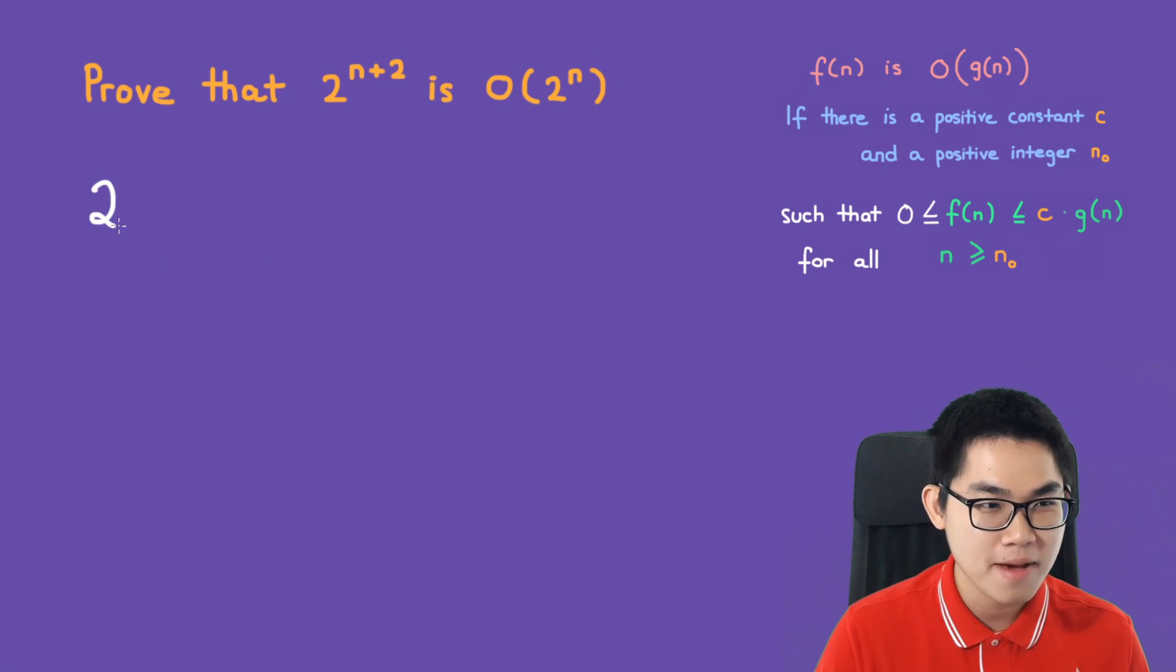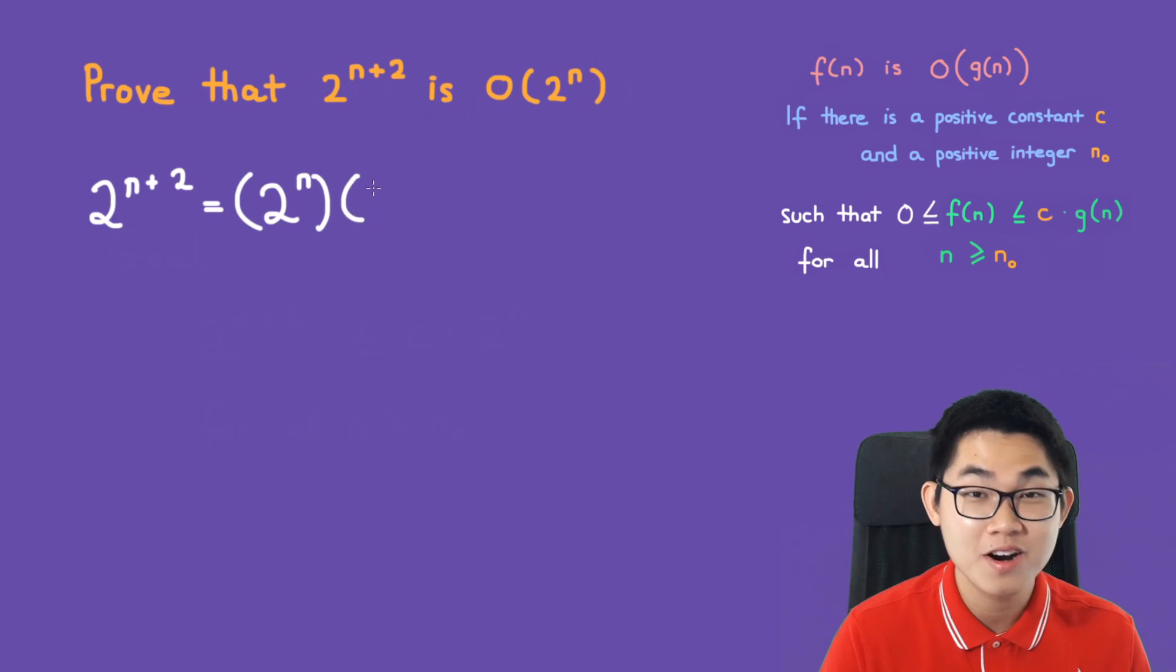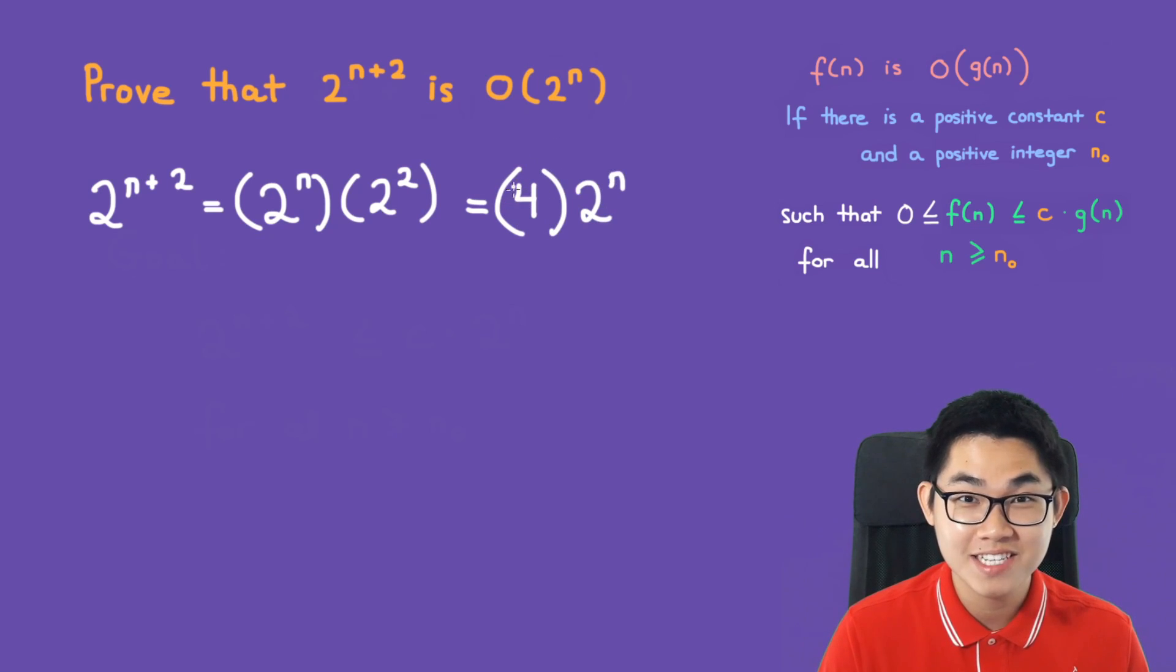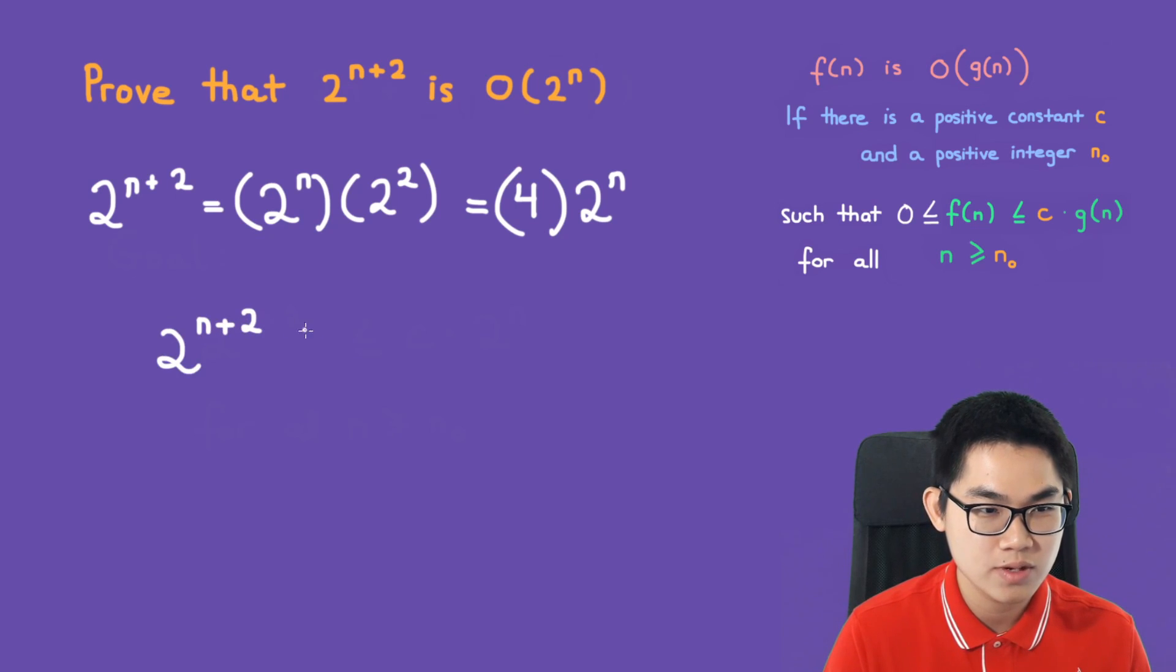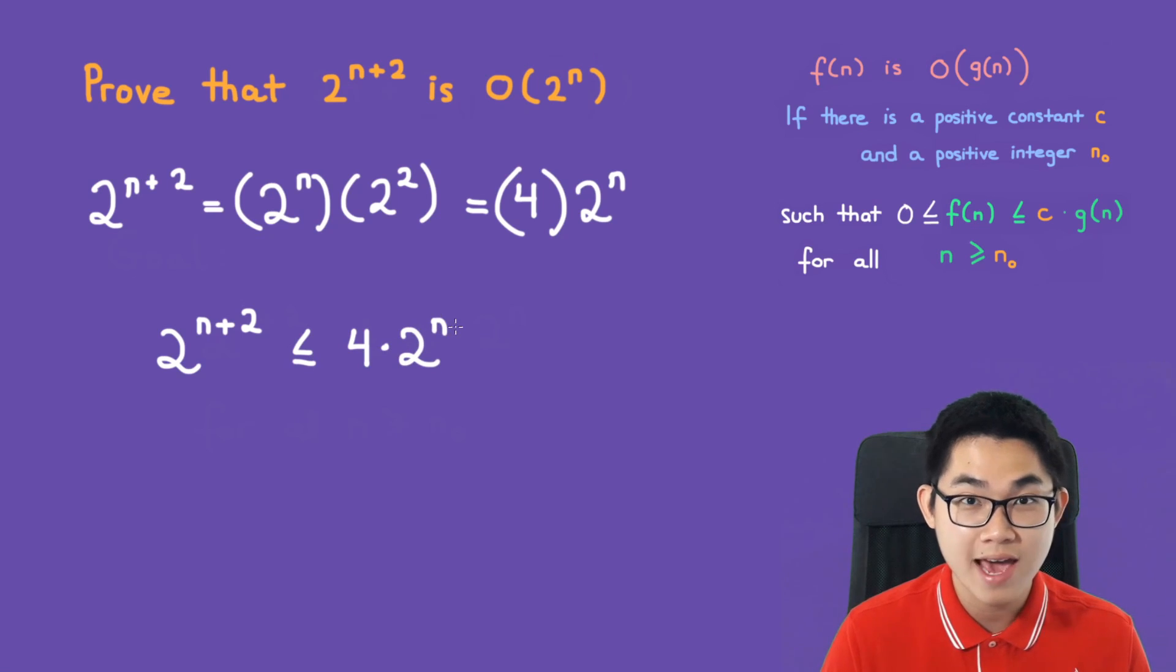We know 2^(n+2) equals 2^n times 2^2, right? So this gives us 4 times 2^n. Now we found a constant 4, so this means 2^(n+2) is less than or equal to 4·2^n. This makes sense because this is an equal sign, so less than or equal to is okay.